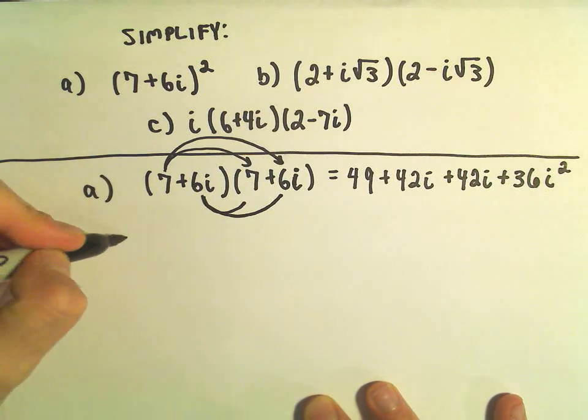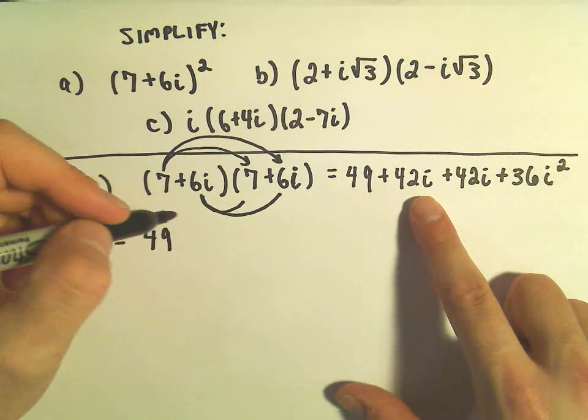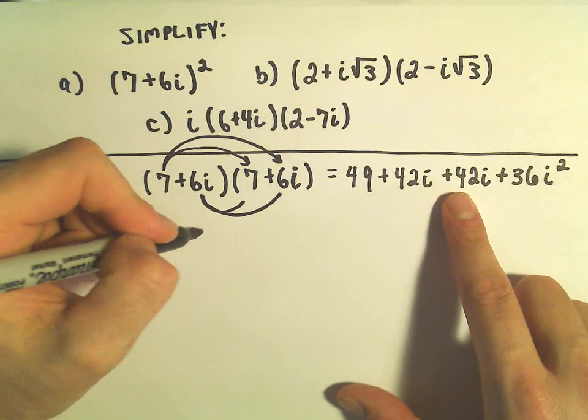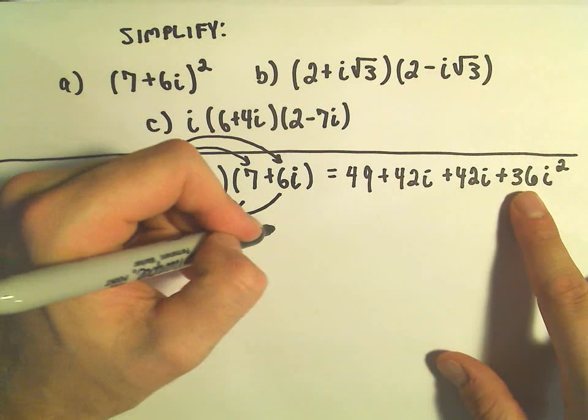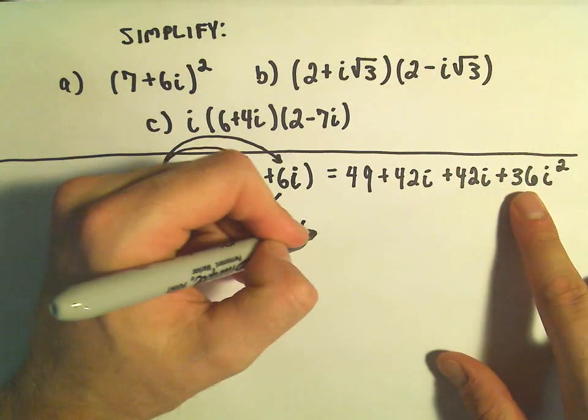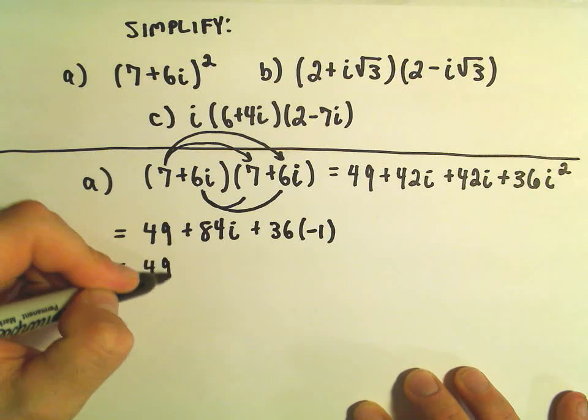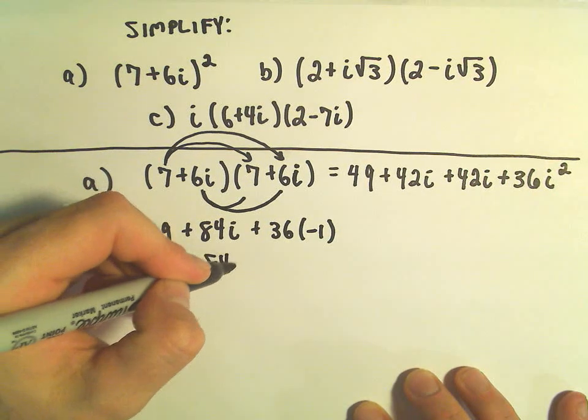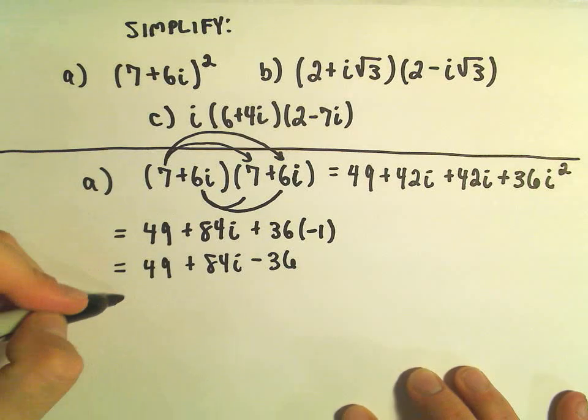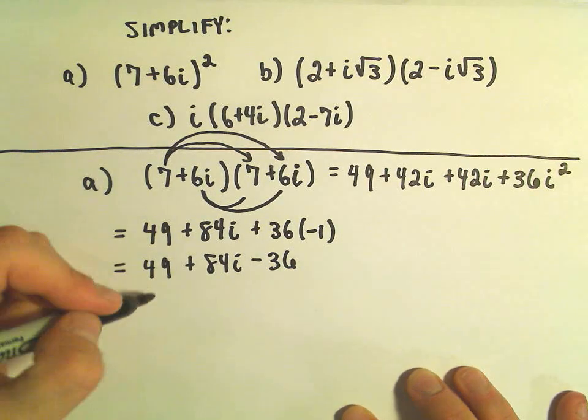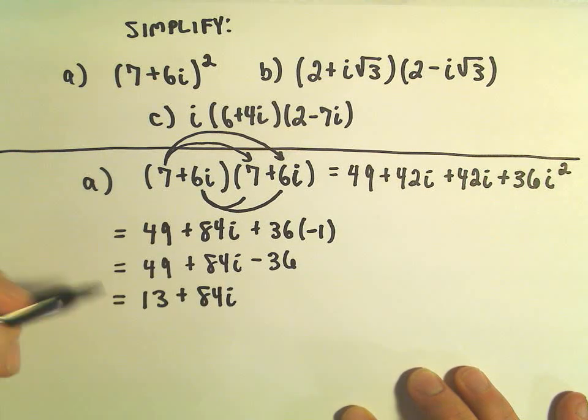So we can simplify this certainly a little bit more. So we have a 49. 42i plus 42i, that'll give us 84i. But recall that i squared is really equal to negative 1. So really what we have here is 49 plus 84i minus 36. So 49 minus 36, that is 13. And then we have our 84i left over.